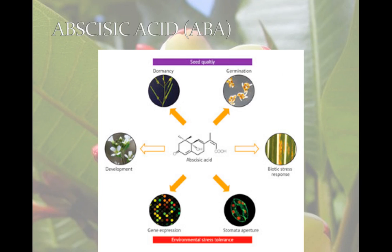ABA, or abscisic acid, slows down growth. It is produced during dormancy in seeds, and it helps plants withstand drought by causing the stomata to close.